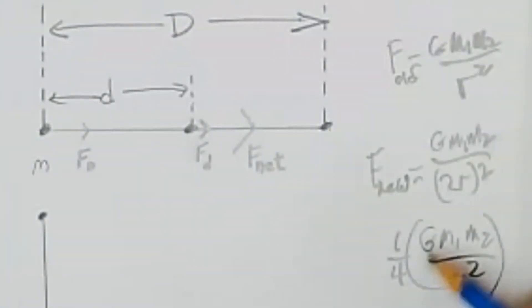And if I were to triple the distance, now this would be a 3r, this would become 1 ninth. So we call this the inverse square law.